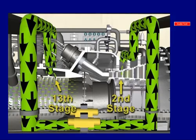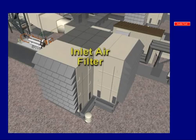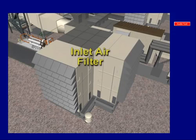Welcome to Book 1, Chapter 1. This chapter will overview the combustion turbine flow paths. The incoming air to the turbine flows through a series of filters on its way to support combustion.